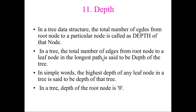In depth, you calculate from the root node to a particular node and count the edges. The longest such path — to the deepest leaf — is the depth of the tree. The depth of the root node is always zero, because there are no edges from the root to itself.